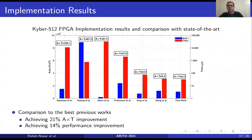To visualize the comparison between different implementations for Kyber at NIST security level 1, we show this figure. As one can see, we achieved 21% improvement in terms of area-time product compared to the best previous work, and also achieved 14% improvement in terms of time.